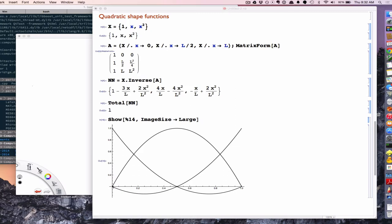So the same goes for the second shape function. At x equals 0, it's 0. At x equal 1 half, it's 1. And at x equal 1, or l, it's 0. And then the third is 0, 0, 1. So that's the Kronecker delta property.